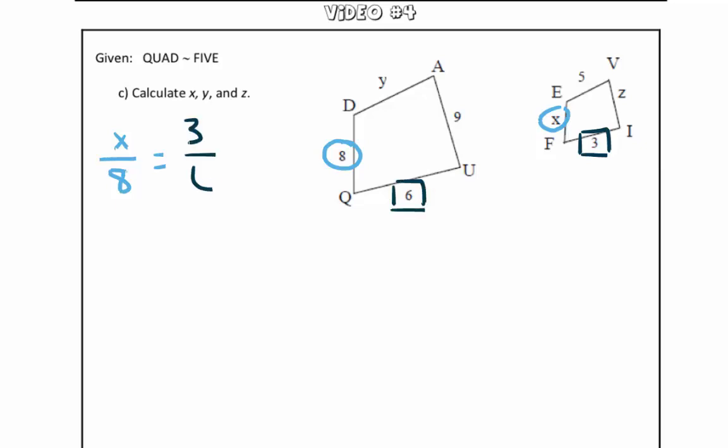The key here is to make sure that you are using the corresponding parts in the same order. So in the numerator, I have the corresponding parts from the small quadrilateral FIVE, and in the denominator, we have the corresponding parts from the larger quadrilateral QUAD. As we know, to solve a proportion, we are going to use cross multiplication.